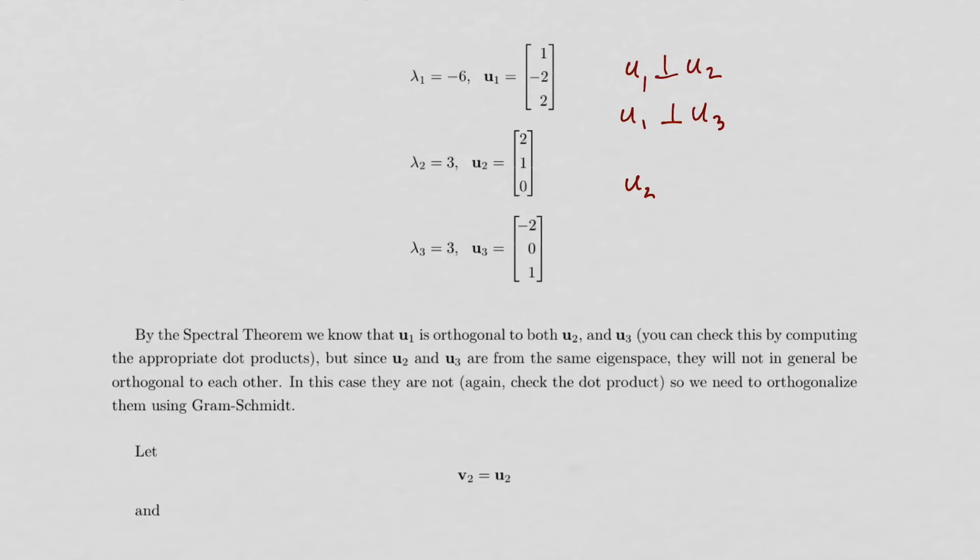However, since U2 and U3 are in the same eigenspace, it is not necessarily the case that they are orthogonal. And in this case, you can check and you'll see the dot product is not 0, so they are not orthogonal.